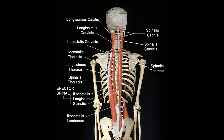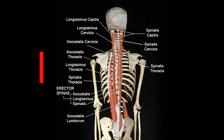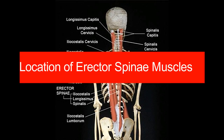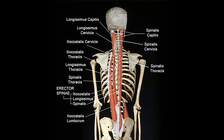The erector spinae is one of the 3 true intrinsic back muscles. It is this muscle group that allows the spine to return to erect position after bending. We bend backwards when these muscles contract, and when only the muscles on one side of the vertebral column contract, we are able to bend sideways. These muscles also facilitate the rotation of the spine and movement of the head, and help in maintaining the alignment of the spine.